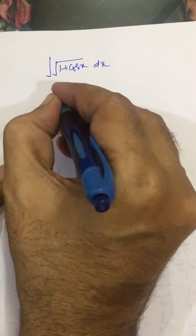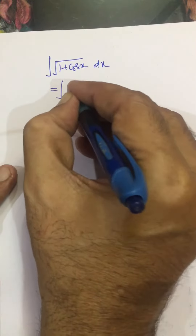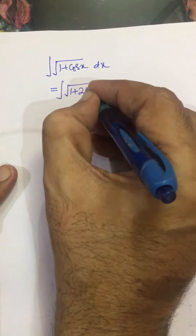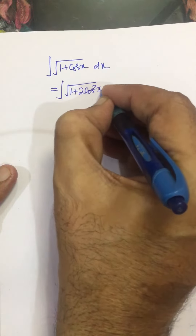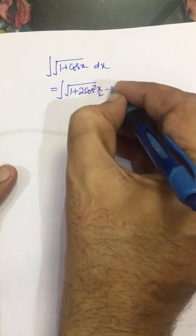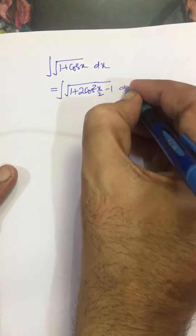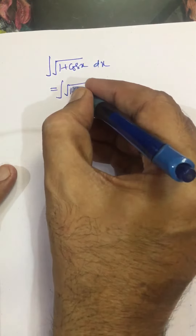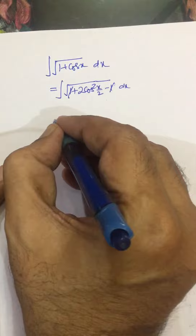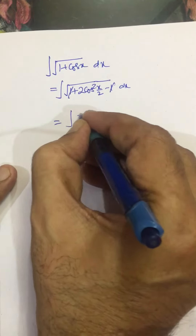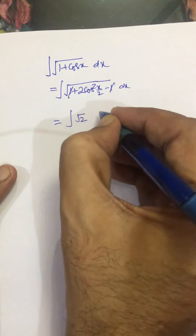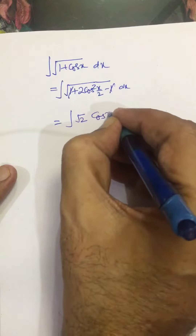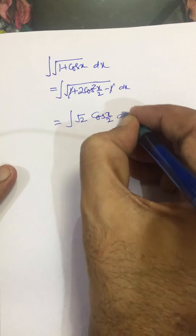We can proceed like this: integral of 1 plus cos x equals integral of 2cos²(x/2) minus 1 dx. So, this one cancels, and we are left with the integral of root 2 cos(x/2) dx.